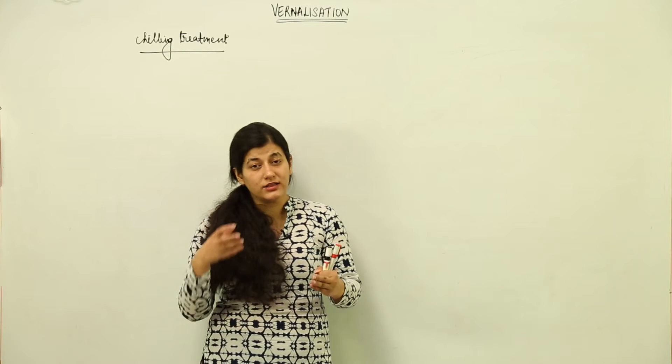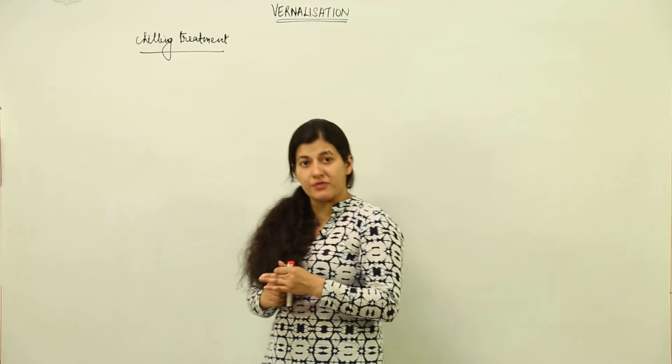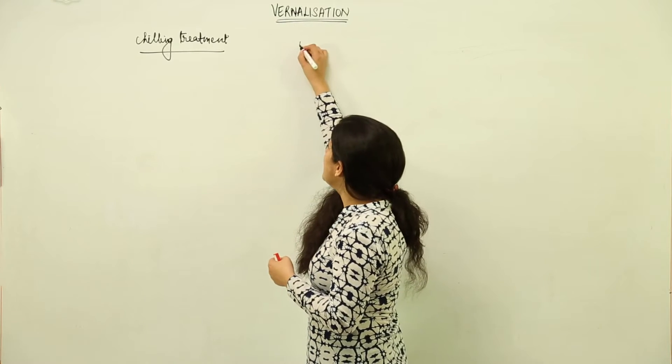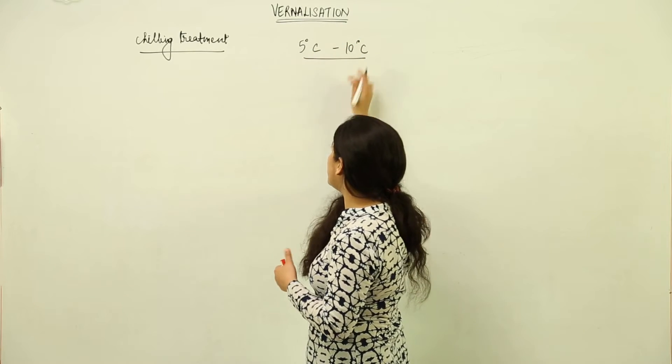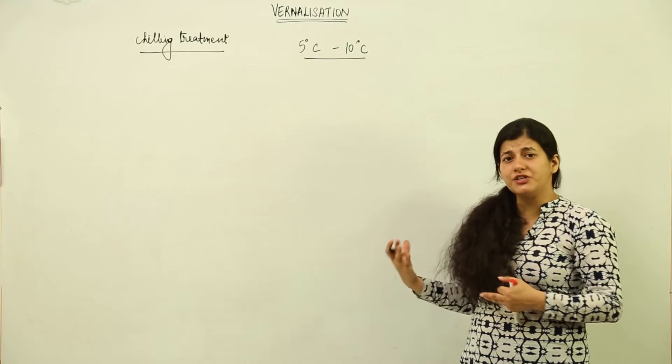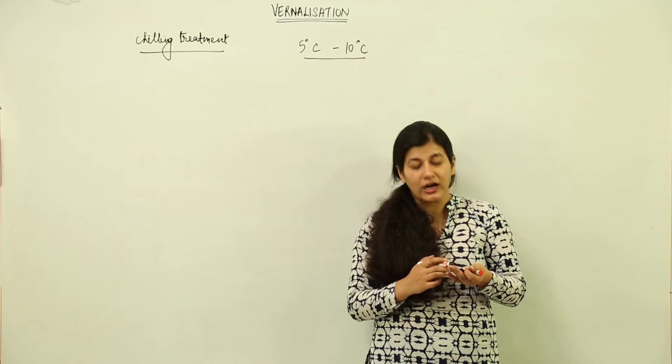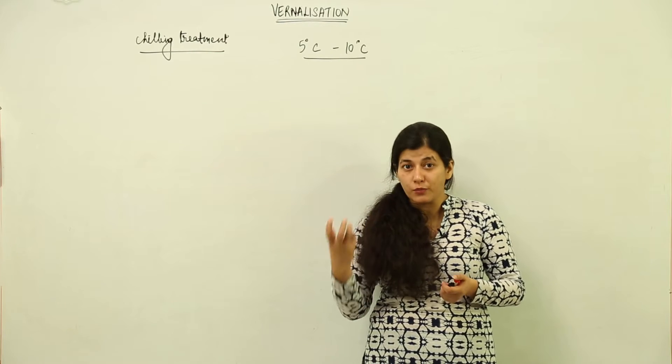In order to have the plants flower in the season of spring or autumn, we need to give them a low temperature of around 5 degrees Celsius to 10 degrees Celsius. When this chilling treatment is done, they flower and we get various varieties of plants, especially monocots.